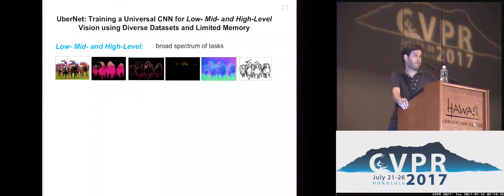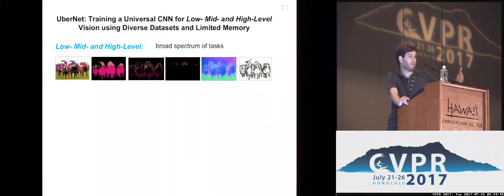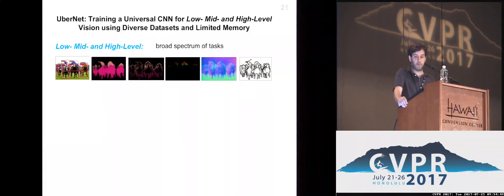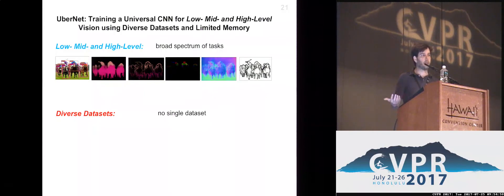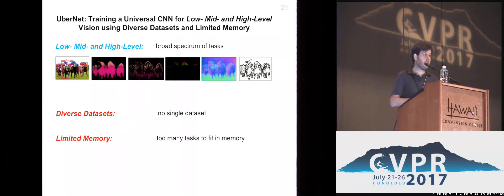This would enable our vision system to tackle a very broad range of tasks, making it like a Swiss knife for vision. But this causes some new challenges. Firstly, we have no single dataset for all of these tasks, so we practically need to unite potentially incoherent and diverse datasets. The other challenge is a very practical concern: we cannot fit everything in our GPU's memory with current hardware limitations.